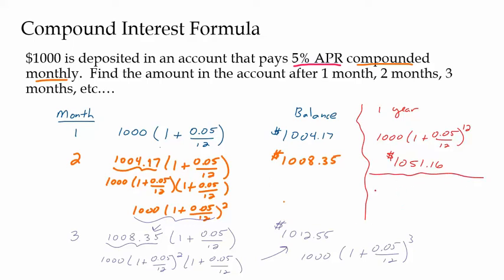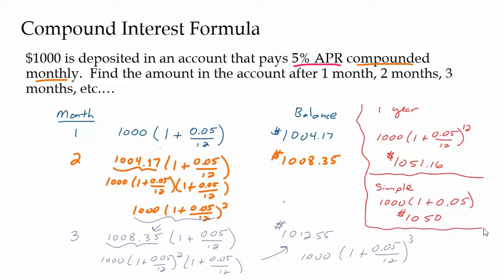I really want to highlight the difference between compound interest and simple interest. If I was doing simple interest, I would just take my $1,000 and increase it by 5% for the year. Five percent of a thousand dollars is fifty dollars, so I'd end up with $1,050. So I made an extra dollar sixteen on my thousand dollars through the power of compounding — that's what compound interest does.